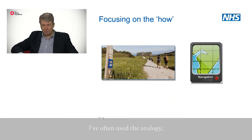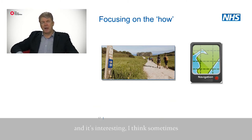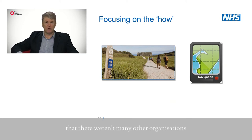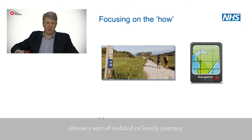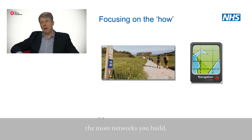I've used an analogy for the last four or five years — the Camino. I spend a week each year on the Camino in Santiago in Northern Spain. The quality improvement journey can feel a little bit like the Camino, because whenever you first start out on your quality improvement journey, you can often find that there weren't many other organisations you could relate to. The first part of that journey can feel almost isolated or lonely. What we want is to create — and I think one of the things the Q community does — is create a community on that journey. The further you walk, the more connections you make, the more networks you build, the more that other people are there to support you.